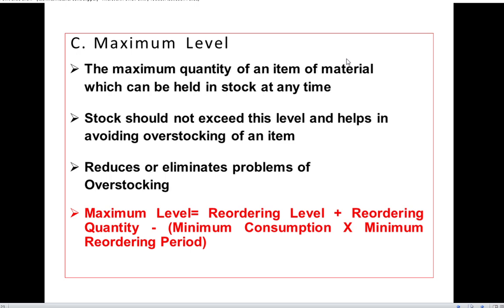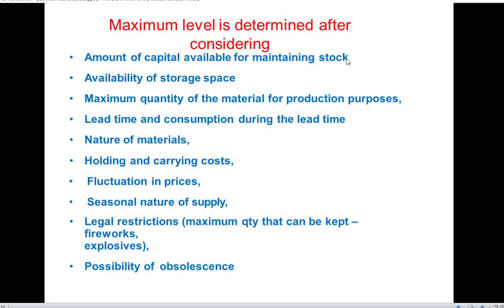Exceeding this level leads to overstocking of material. The formula for maximum level is: Maximum Level = Reorder Level + Reorder Quantity − (Minimum Consumption × Minimum Reorder Period).